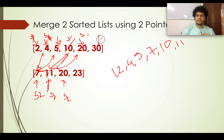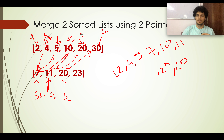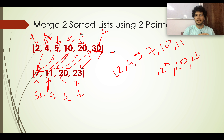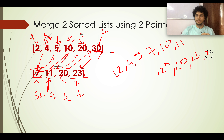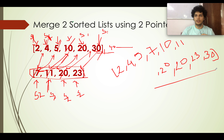S1 is added and moves ahead. S2 stays at 20. You then compare 20 and 30 — 20 wins, and you move S2 to the next pointer. Now comparing 23 and 30 — 23 wins, add it. The last part is an important corner case: whatever remaining elements are still in either array, you simply append them all to the resultant array. For example, if S1 still has elements like 40, 50, 100, you blindly add those at the end.